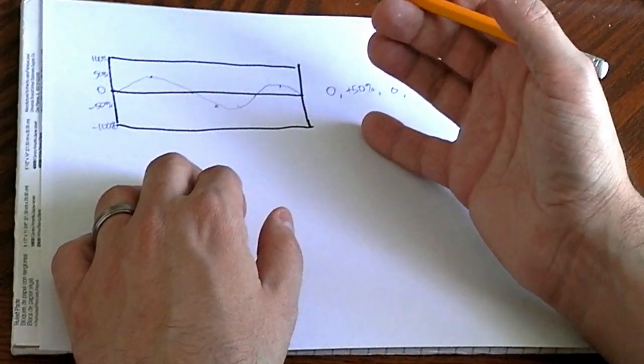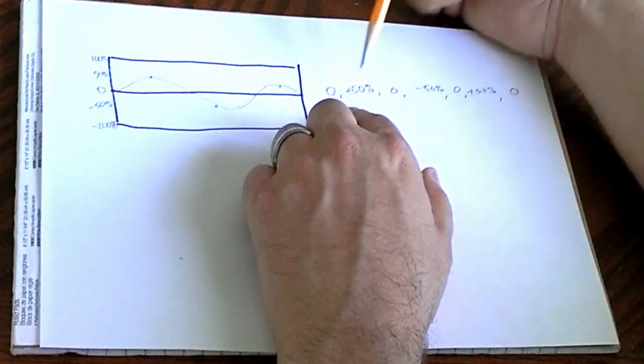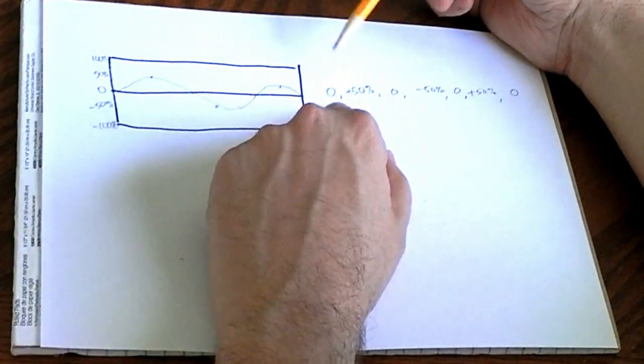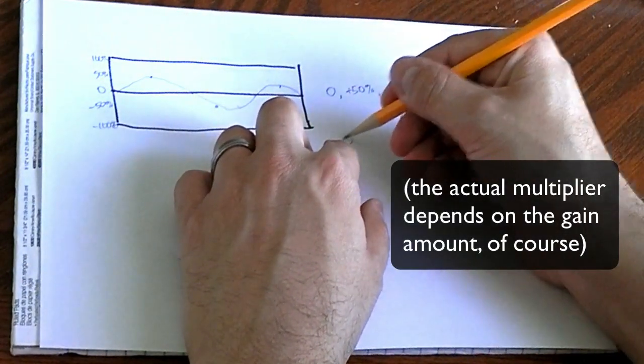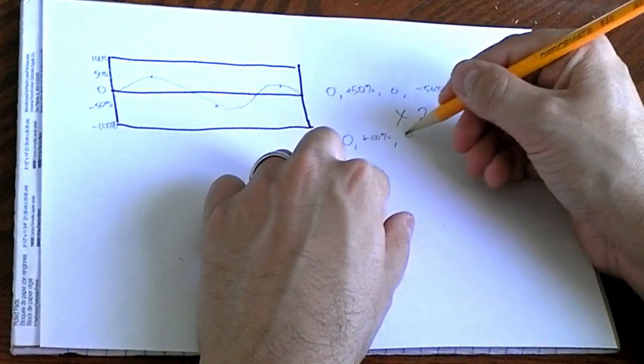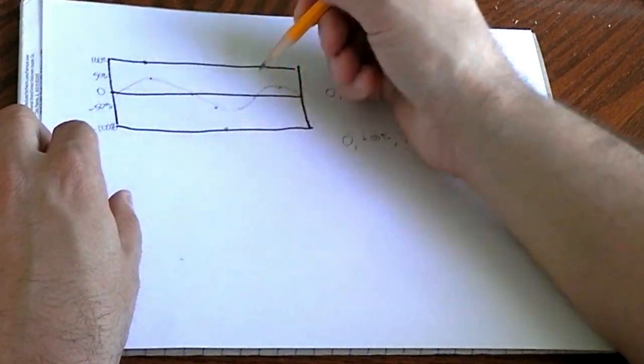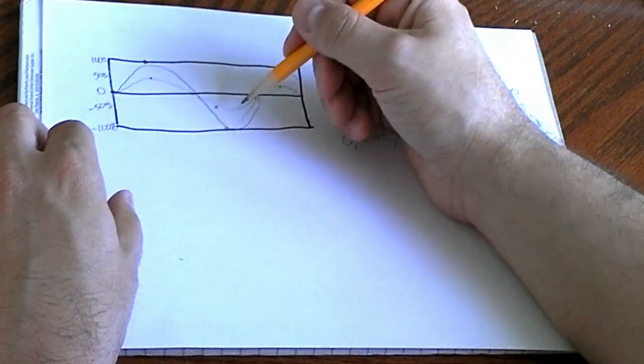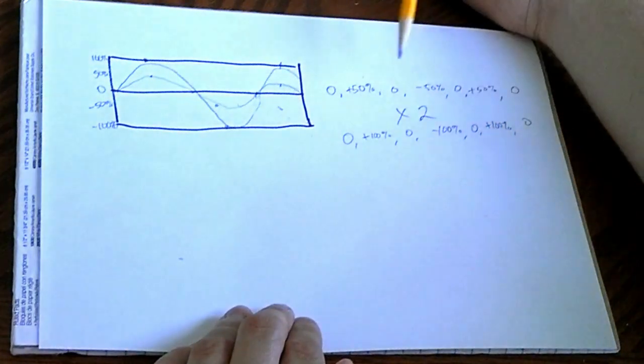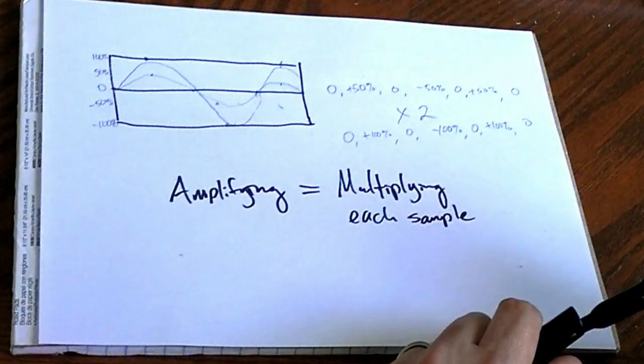If we want to amplify this wave, say double the volume, add 6-ish decibels, what the computer will actually do, since a computer is really a giant calculator that does millions of operations per second, it is going to multiply every one of these numbers times 2, which gives us these numbers, 0 plus 100%, 0, negative 100%, 0, positive 100%, and 0 again, and that gives us a wave like this. I drew it really terribly, but that is what the wave ends up being when you amplify it. Amplifying is the exact same thing as multiplying. That is all there is to it. It's a bunch of multiplication.